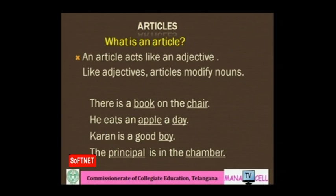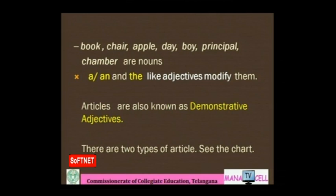What is an article? An article acts like an adjective. Like adjectives, articles modify nouns. Read some sentences: 'There is a book on the chair. He eats an apple a day. Karan is a good boy. The principal is in the chamber.' The nouns — book, chair, apple, day, boy, principal, chamber — are modified by a, an, and the, just like adjectives. Generally, articles are also known as demonstrative adjectives.